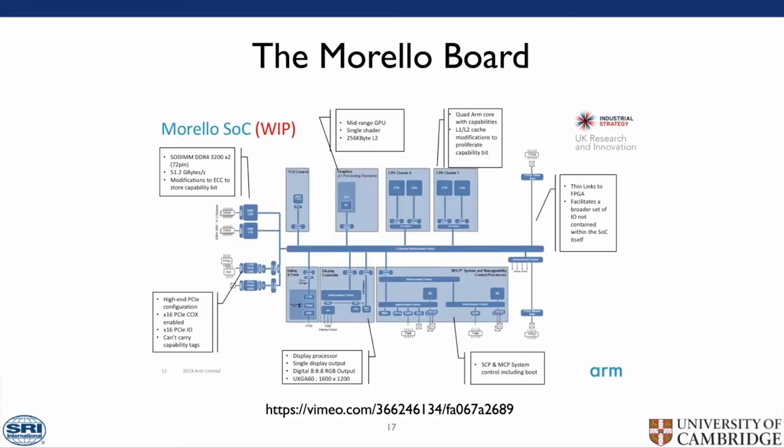The Morello board is a demonstrator of this capability architecture. It is a quad-core high-end CPU based on the Neoverse N1, the same CPU used in the Amazon AWS Graviton2 instances. It is built on a 7nm process targeting 2GHz, compliant with the server-based system architecture, which is the standard ARM server platform. The BSDs, as long as they have an ARM64 port, should boot by default.